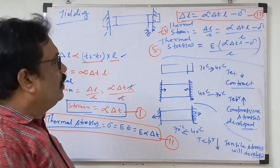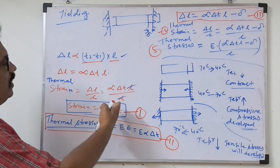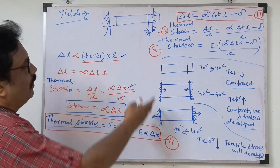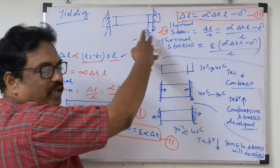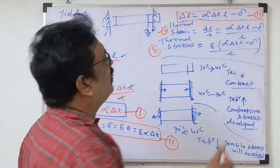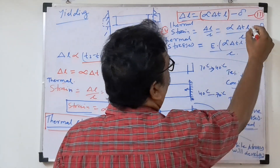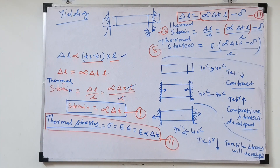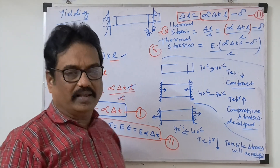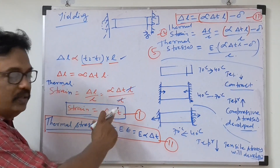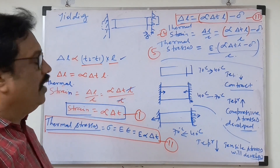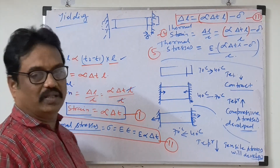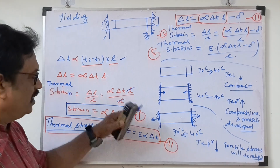In the next video, we will solve two or three questions using these formulas directly. If asked for thermal strain, write alpha × delta T. If asked for thermal stress, write E × alpha × delta T. For the yielding case, subtract the distance delta from the elongation. These questions are asked in competitive exams, GATE, and university exams everywhere — so be careful and study this twice and thrice.